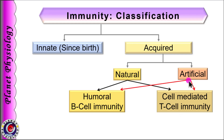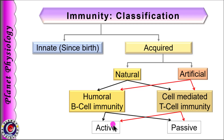Artificial immunity also can be mediated either via B or T lymphocytes. In both these types, when the immune cells in the body are activated to deal with the pathogens, it is known as active immunity. In contrast, when activated T lymphocytes or antibodies are provided to the person to confer the immunity, it is known as passive immunity — ready-made immunity offered to the patient as an emergency treatment.